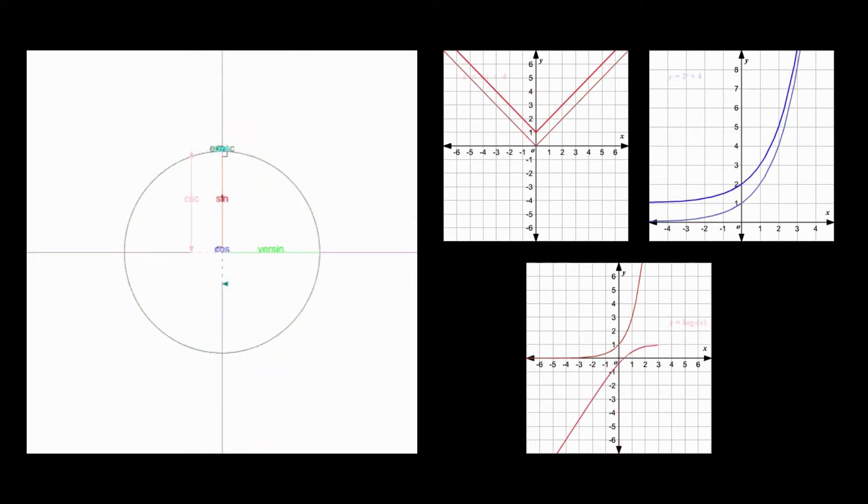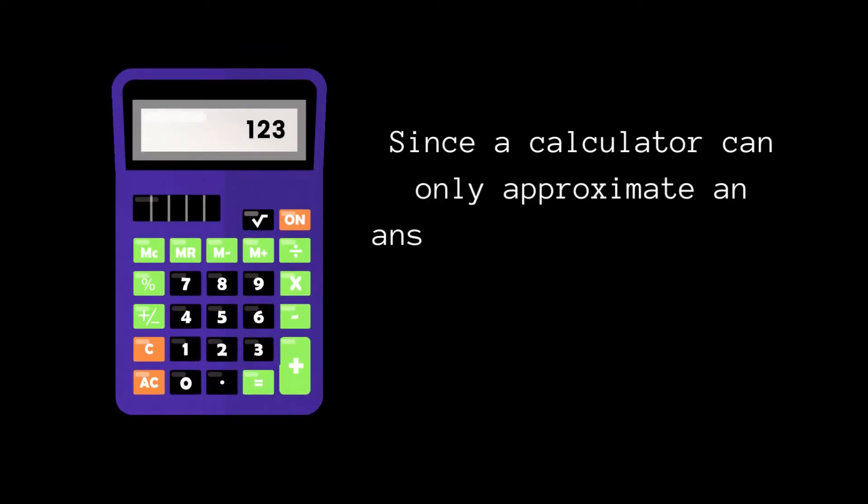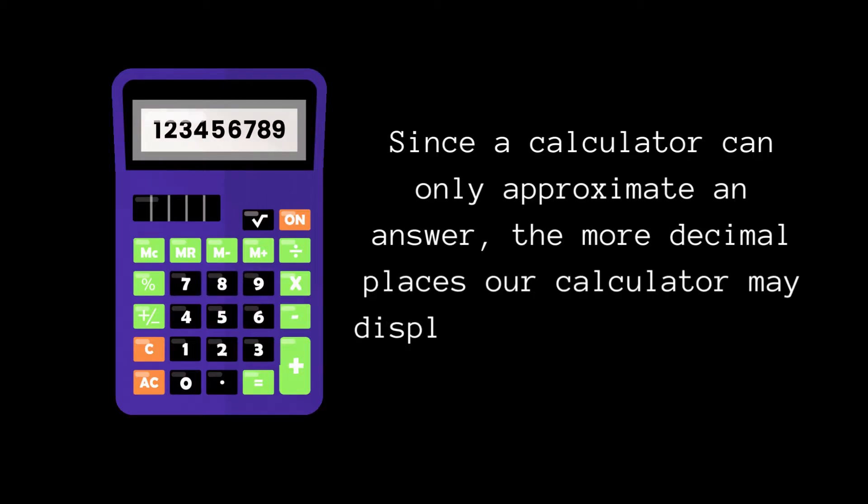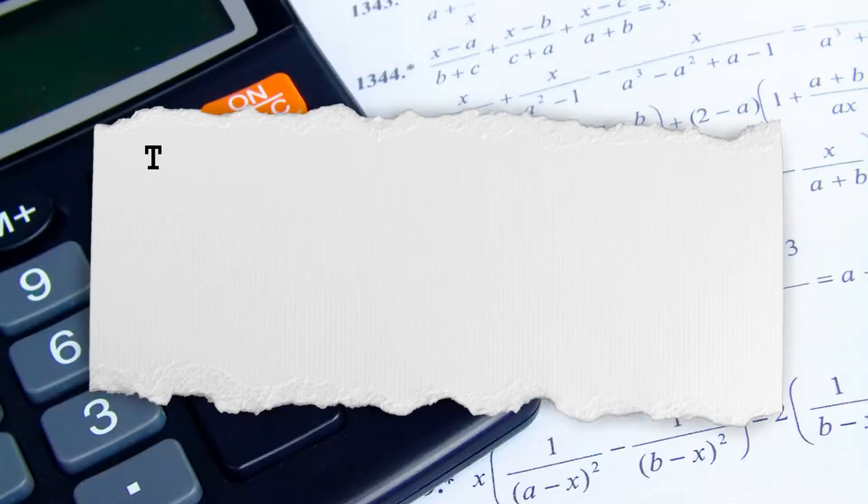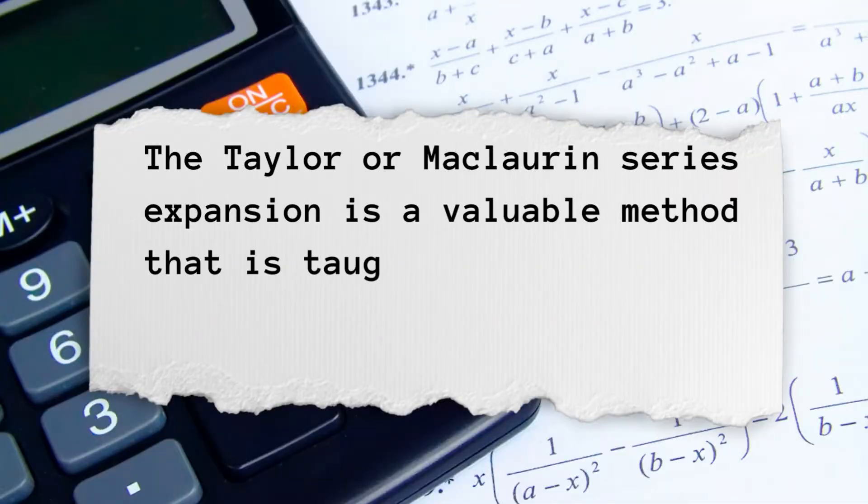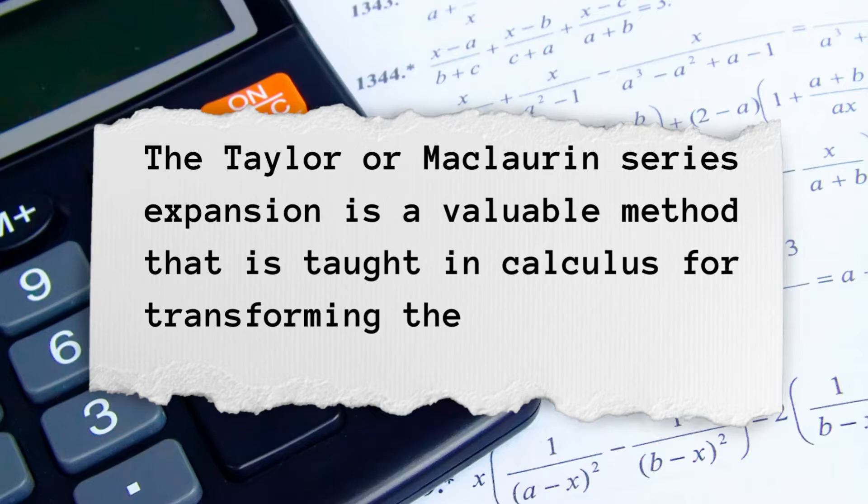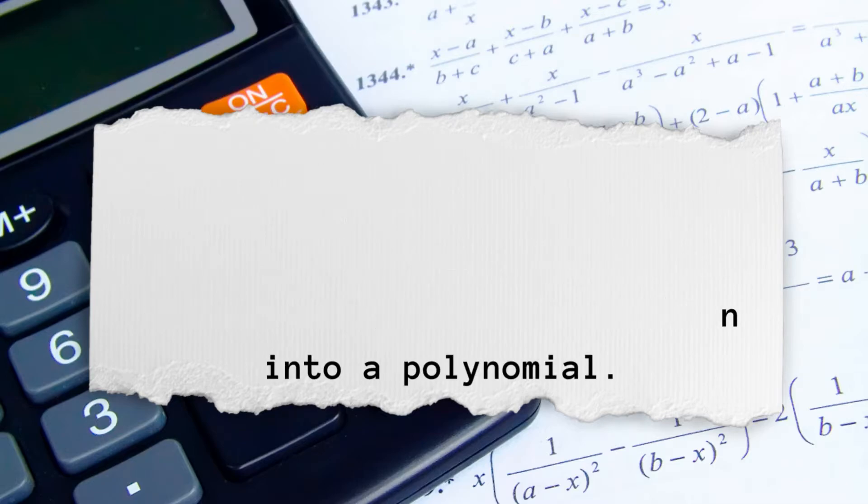A calculator is used to find the result of sine, cosine, or tangent, with the exception of a few exceptional angles. Since a calculator can only approximate an answer, the more decimal places our calculator may display, the more advanced it is. The Taylor or Maclaurin series expansion is a valuable method that is taught in advanced calculus for transforming the sine function into a polynomial.